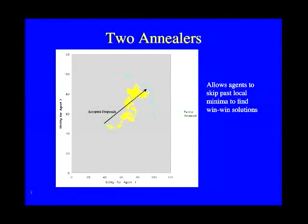When simulating agents that use this approach, the proposals accepted by the agents wander all over the map — sometimes worse for one party, sometimes for the other — but they almost always end up very close to the Pareto optimal line. Because agents are willing to accept temporary losses, they are able to skip past local minima and eventually converge on win-win solutions.